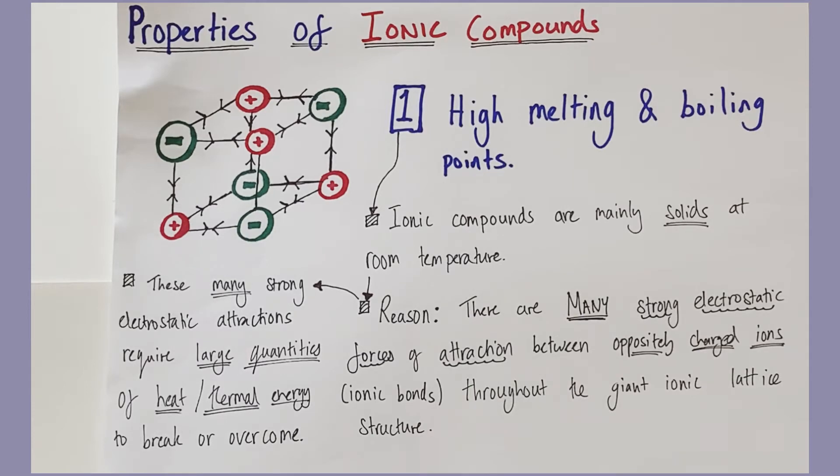So if you think about an ionic compound like sodium chloride or magnesium bromide, they are often solids at room temperature. And the reason for that is because there will be many strong electrostatic forces of attraction between the oppositely charged ions throughout that giant lattice structure. And you're going to require a lot of heat energy to melt that structure.